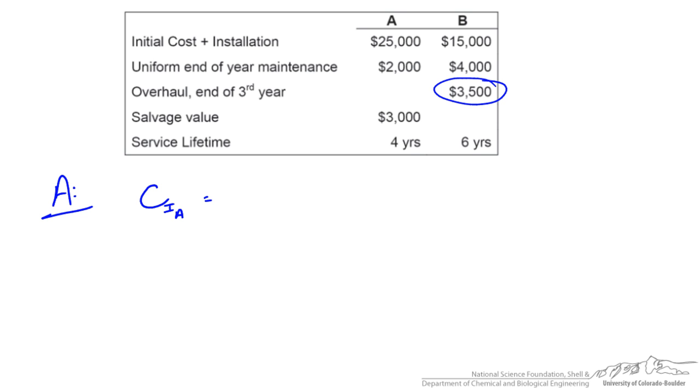First we calculate the initial cost. This is $25,000 from the chart plus the present value of the annuities, which is $2,000 a year times the uniform series present worth factor. This is 1.08 to the fourth minus 1, divided by 0.08 times 1.08 to the fourth, bringing our annuities into present value. You should get $31,624.